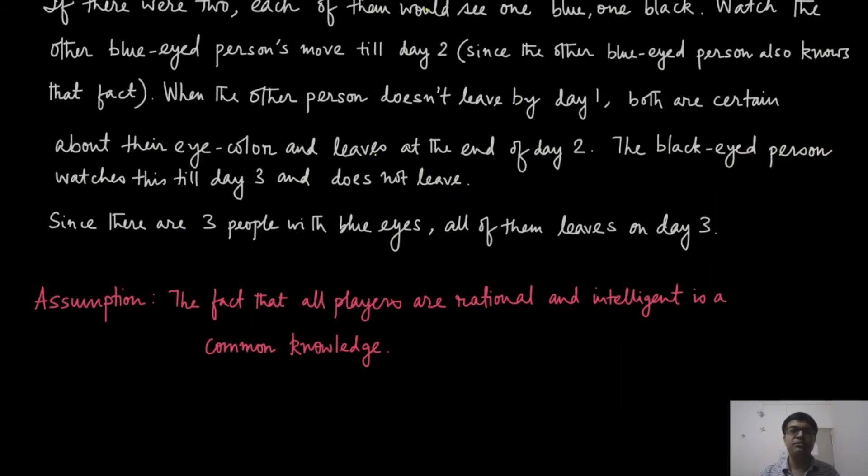The assumption that we are going to make in all of this course is that the fact that all the players are rational and intelligent is a common knowledge. So everybody knows it, everybody knows that everybody knows it, and everybody knows that everybody knows that everybody knows it, and so on.